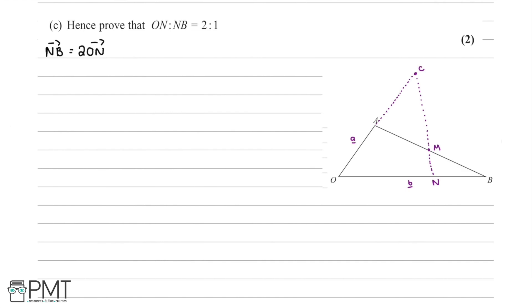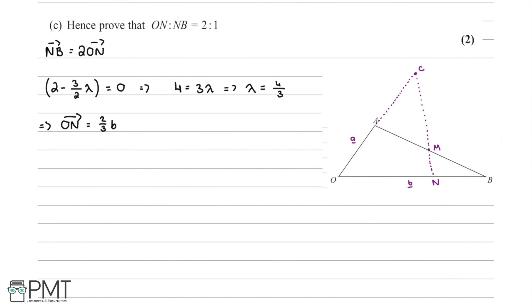We start by taking the a component of our vector ON, which was (2 minus three over two lambda), and set this equal to 0 to solve for lambda. Therefore 4 equals 3 lambda, so lambda equals 4 over 3. Taking the b part of our vector, ON equals two over three b. This means that the vector N to B is equal to one over three b. Therefore we have shown that ON and NB have ratio 2 to 1, as required.